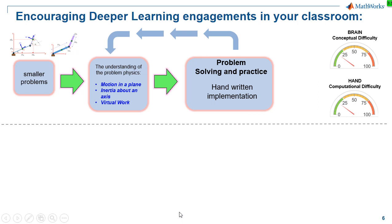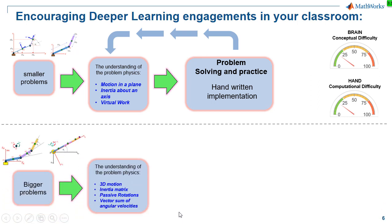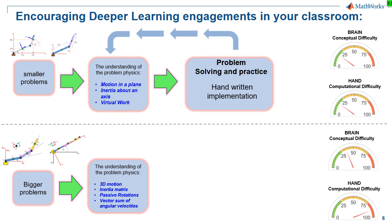But this balance between conceptual difficulty and computational difficulty really starts to change as we ask students to explore bigger size problems. Now take that 4DOF robotic manipulator example. When you study this type of machine, there are certainly new and more difficult concepts that a student needs to understand. But when we ask students to apply these concepts to practice problems using pen and paper, the corresponding increase in computational effort grows significantly.